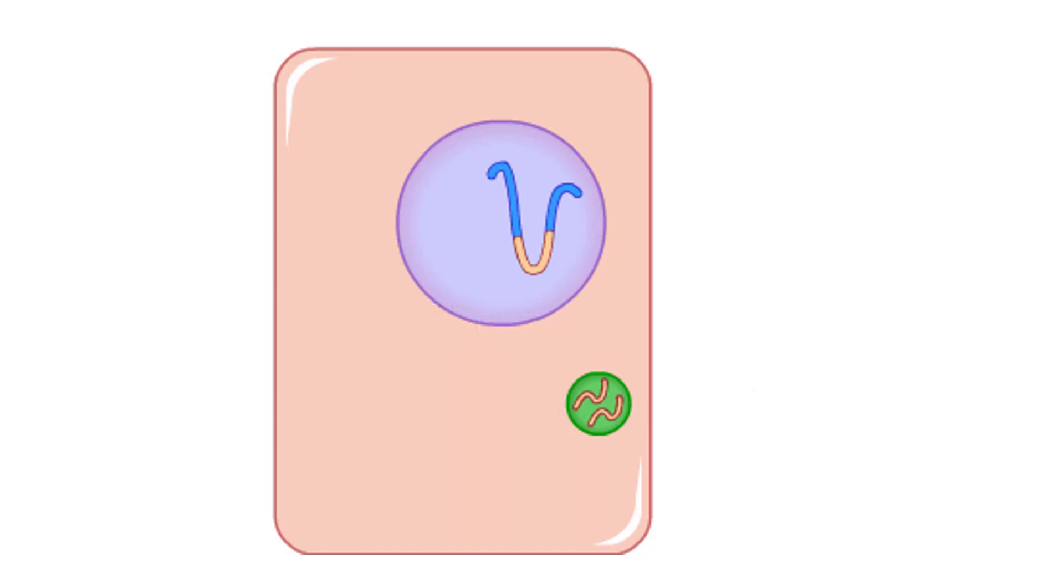The proteins and mRNA migrate to the cell surface, where they assemble, then bud through the host membrane. This produces new virus particles and completes the replication cycle.